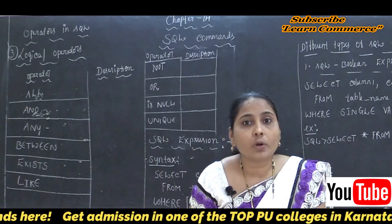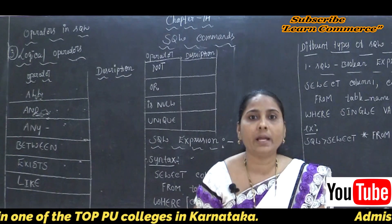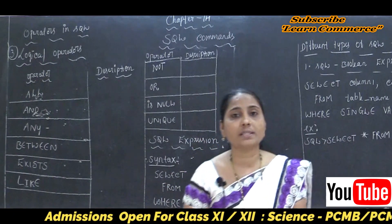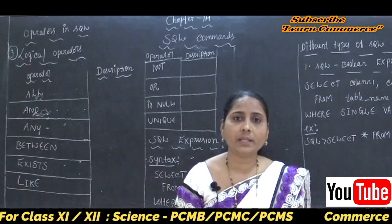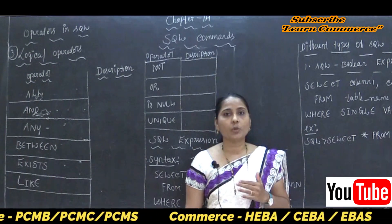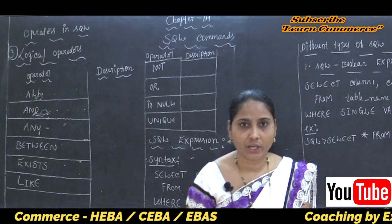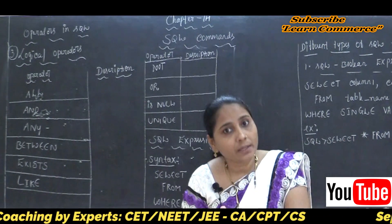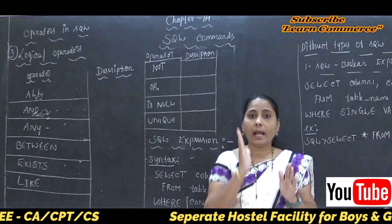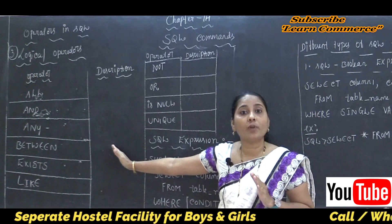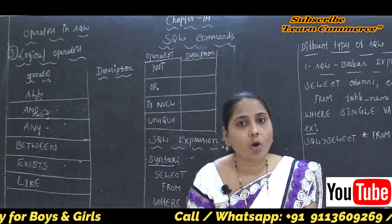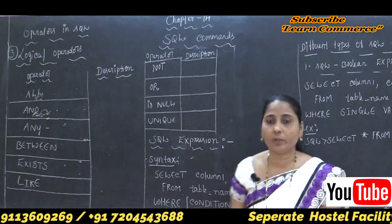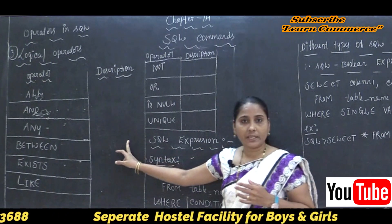After the ALL Operator, the next logical operator is called the AND Operator. Why are we using the AND Operator? In case you want to check more than one condition — maybe salary greater than or equal to 35,000 and also age less than 40 — by using the AND condition, we can check more than one condition. The AND Operator allows the existence of multiple conditions in an SQL statement WHERE clause.